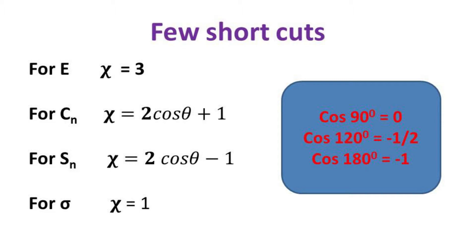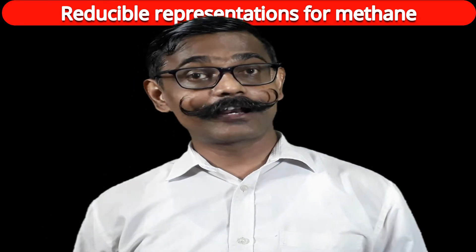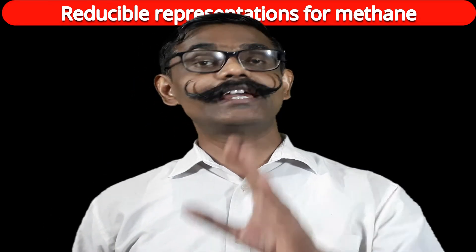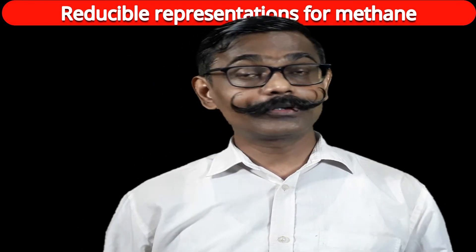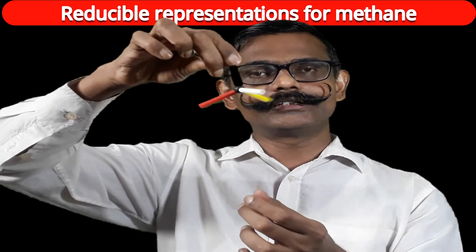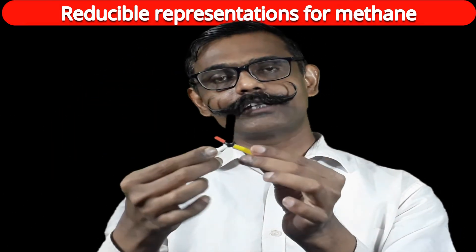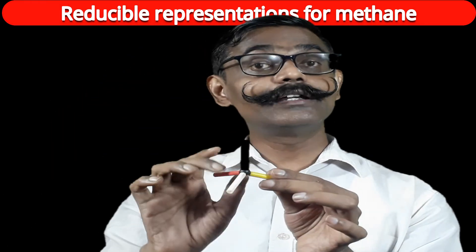Now let us find reducible representations for the tetrahedral molecule methane. The symmetry operations are: E, 8C3, 3C2, 6S4, and 6σd. In methane, any bond considered is a C3 axis, with 2 operations per axis and 4 bonds, giving 8 C3 operations total.